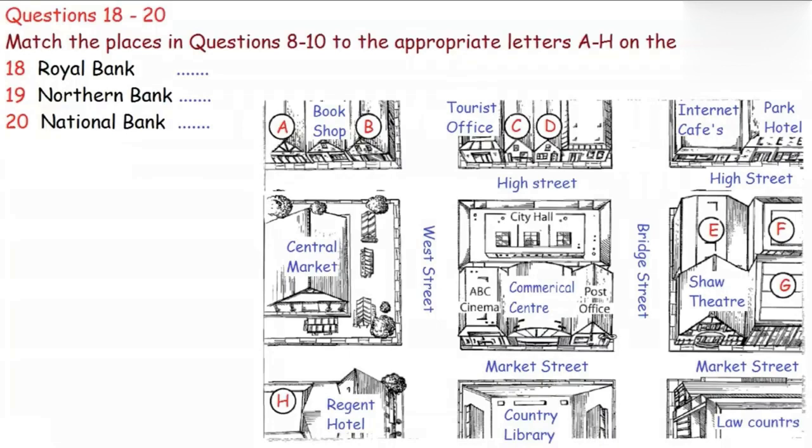And the last one, the National Bank? You can go either way from the centre. Up West Street or Bridge Street, and then along past City Hall. The bank is on the other side of the road, right next to the tourist office. You can't miss it. Great. Thanks a lot for your help. Anytime. Bye.